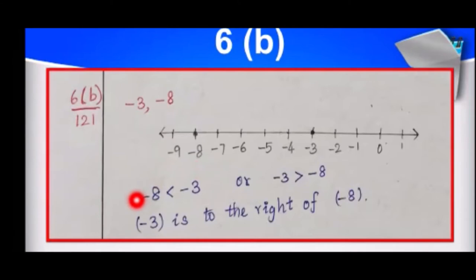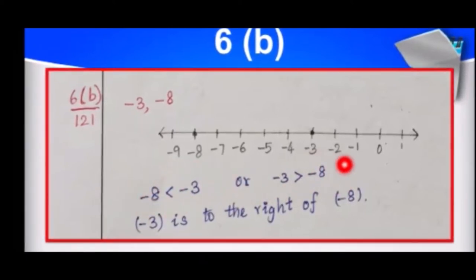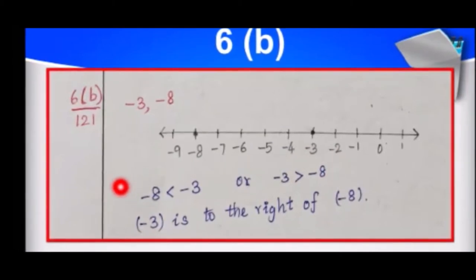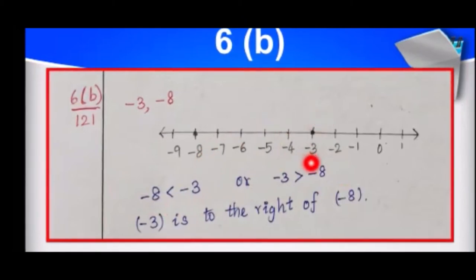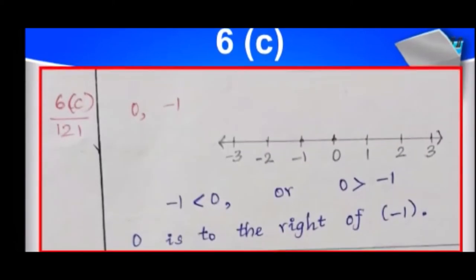We do not need to write which number is smaller or greater, but we can find that out too. Which number is on the right side, which number is on the left side — minus 3 is to the right side of minus 8. Next, 0 and minus 1. 0 is here, minus 1 is here.